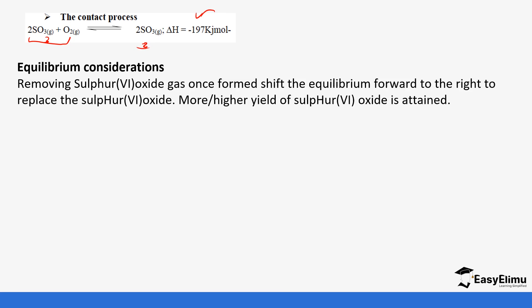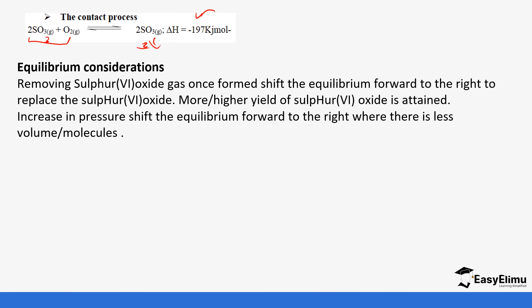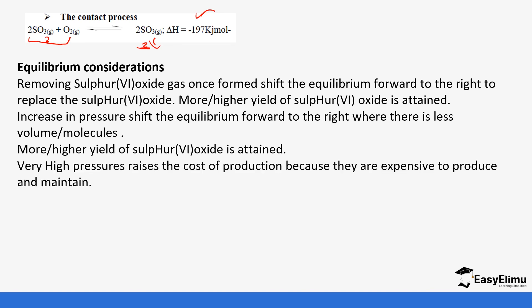Another industrial process is the contact process, which is also an exothermic reaction. The number of molecules in the reactants is greater than in the products. Removing sulfur trioxide (SO₃) once formed shifts the equilibrium forward, meaning the system works to produce more of that product. So the equilibrium shifts to the right, producing more sulfur trioxide. Increasing pressure also shifts the equilibrium towards the side with fewer molecules — the side where sulfur trioxide is produced — so more sulfur trioxide is produced.